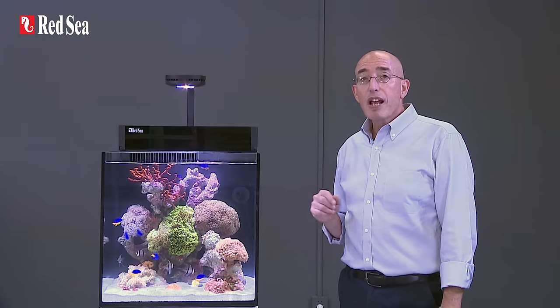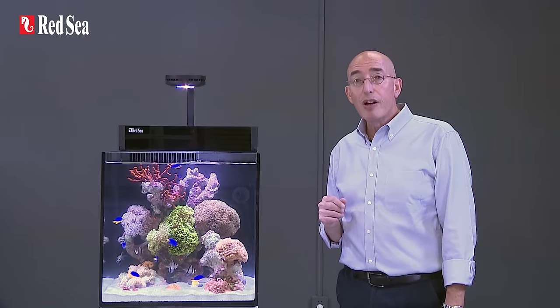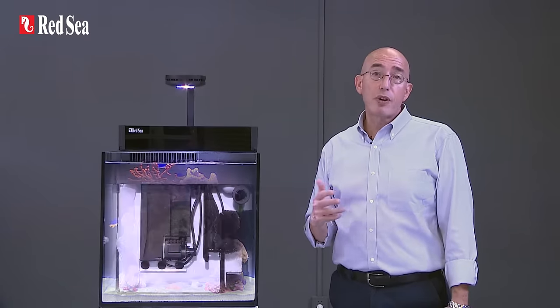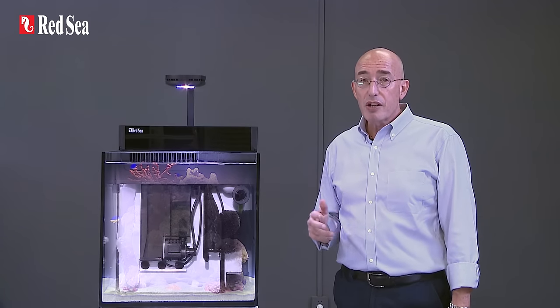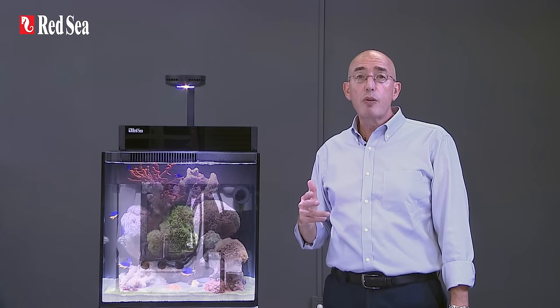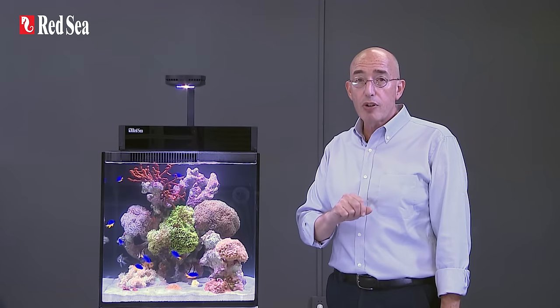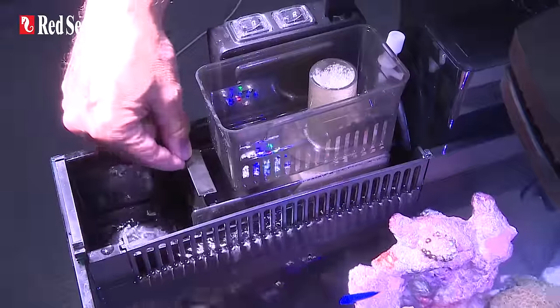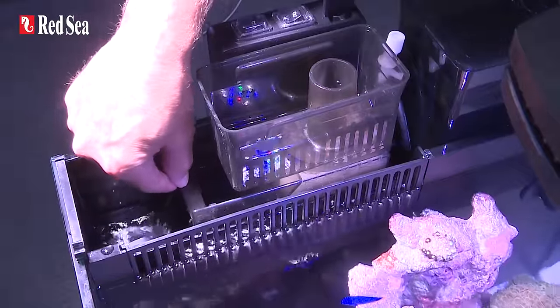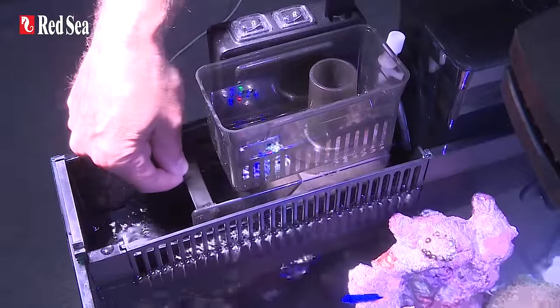The center of the sump houses the nano protein skimmer which meets Red Sea's reef spec criteria for even the most demanding SPS corals, passing the entire volume of the aquarium water through the skimmer approximately 3 times per hour and with a 3 to 1 water to air ratio. The skimmer has an adjustable outlet gate to maintain the optimal skimmate consistency.